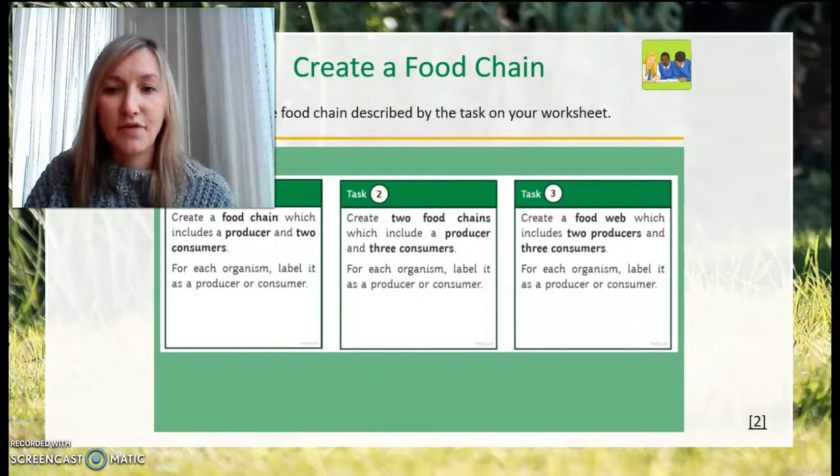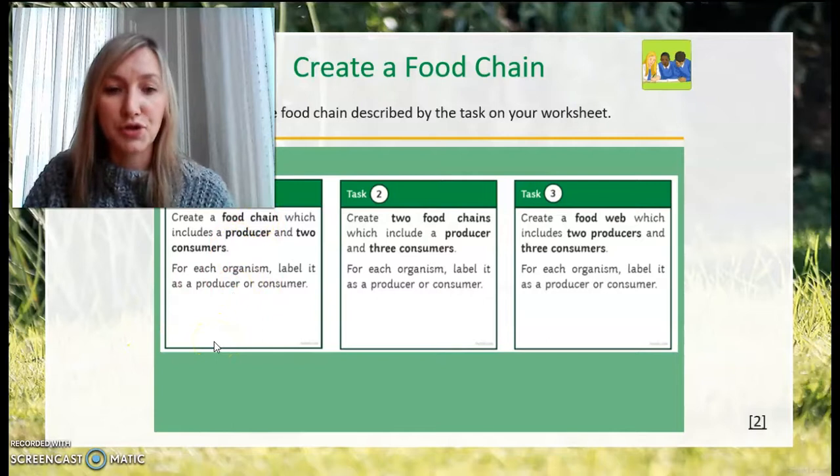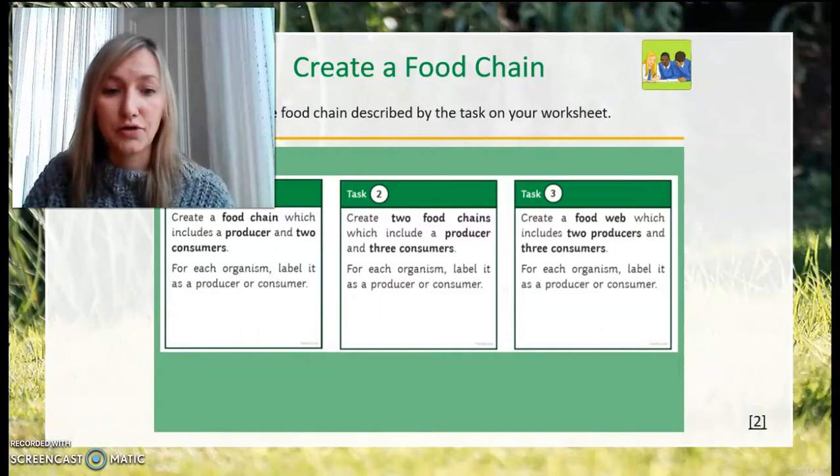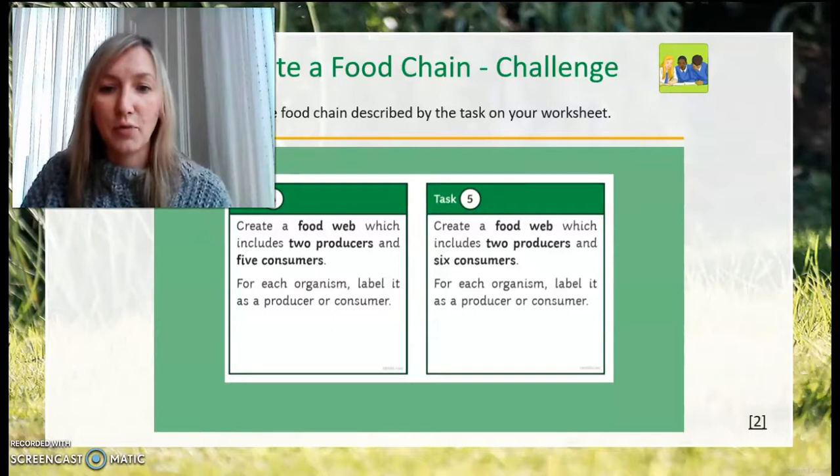On your worksheet today, you will find several tasks. For each task, you are to complete either a food chain or a food web that meet the criteria outlined in that task. So, for example, number one is the simplest, a food chain that includes a producer and two consumers. You can choose any animals and plants to create your food web. You may wish to do this on paper and draw it by hand with some diagrams of the animals, or you may wish to complete this digitally. Either is fine, but please upload your work either as a photo or digitally onto the worksheet. Tasks one to three are what everyone should be able to achieve. And for extra challenge, have a go at tasks four and five, which have more complicated food webs to produce.